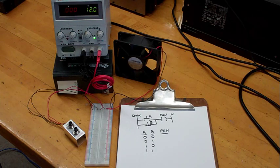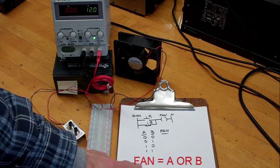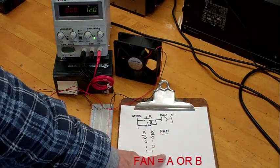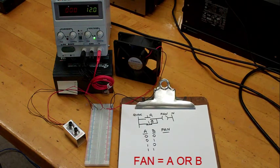This is called the A or B case. If you were to complete the truth table, what would be the ones and zeros in the fan column?